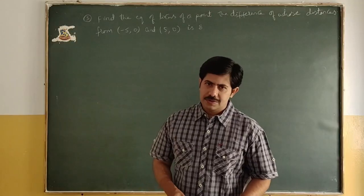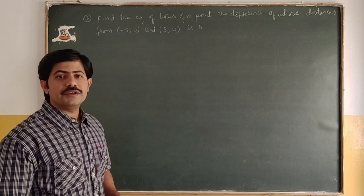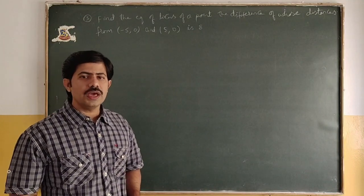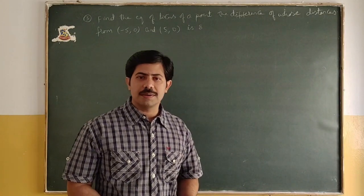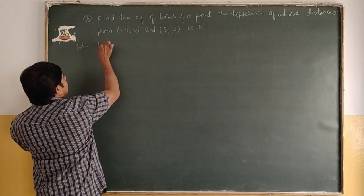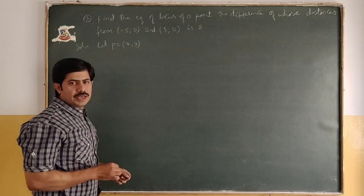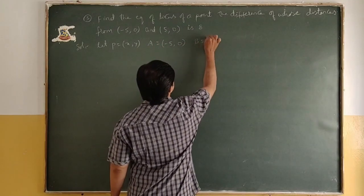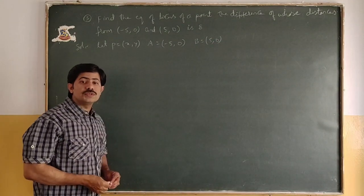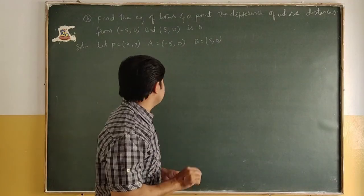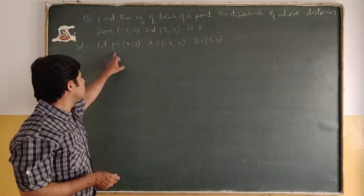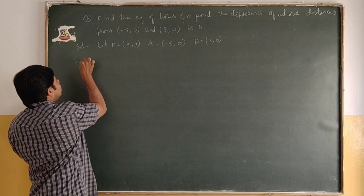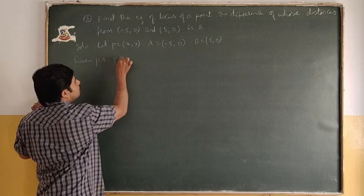So this problem is completed. Next problem: find the equation of locus of a point, the difference of whose distances from (-5,0) and (5,0) is 8 units. Here difference means subtraction. Let P = (x,y) be any point, A = (-5,0) and B = (5,0). The condition is PA - PB = 8.